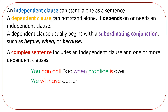We will have dessert. That's another independent clause — it stands by itself. It has the subject we and the verb will have. After we finish dinner. It's a clause that has a subject we and the verb finish, but it starts with the subordinating conjunction after. Together, though, we have a complex sentence: We will have dessert after we finish dinner.